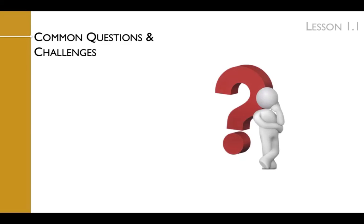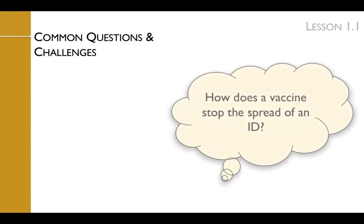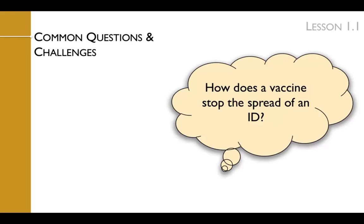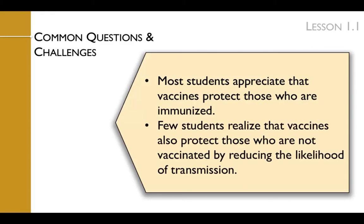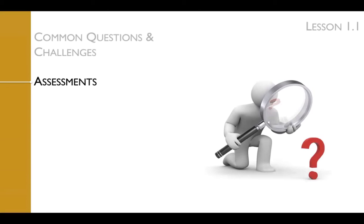One of the most common questions students have is: how does a vaccine stop the spread of an infectious disease? Most students appreciate that vaccines protect those who are immunized. Few students realize that vaccines also protect those who are not vaccinated by reducing the likelihood of transmission. At the end of the lesson, collect the lesson worksheets to assess students' reflections about the pros and cons of the flu shot.